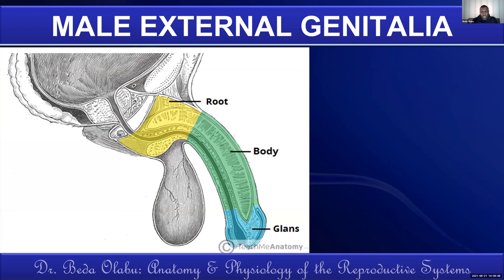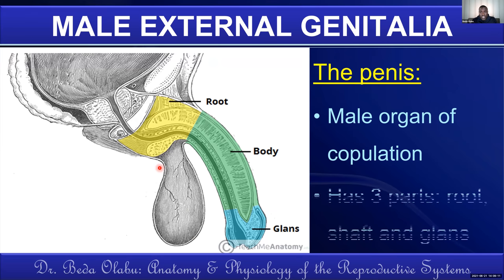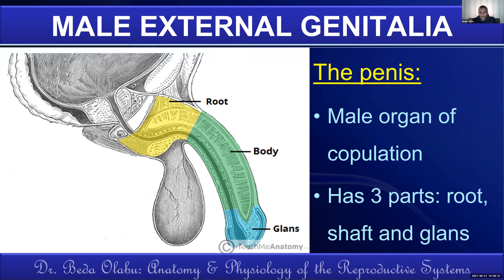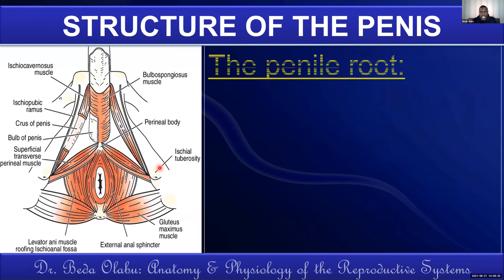Apart from the scrotum, we have the penis — the male organ of copulation. The penis has three parts: the root, the shaft, and the glans of the penis. The shaft is also called the body of the penis. Let's talk about the structure of the penis starting with the root.